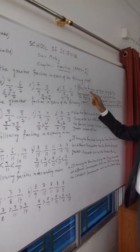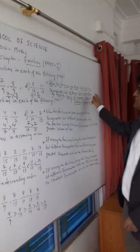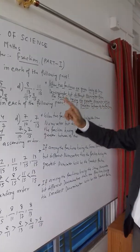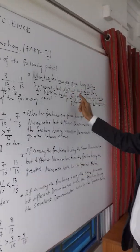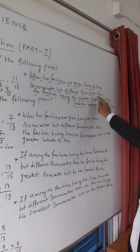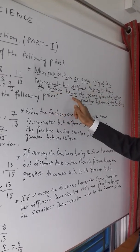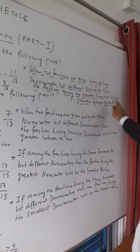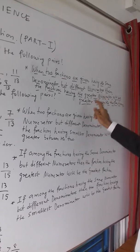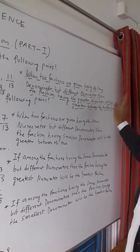When two fractions are given having the same denominator but different numerators, then the fraction having the greater numerator will be greater between the two fractions.